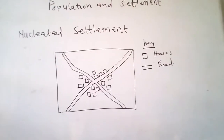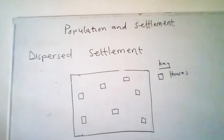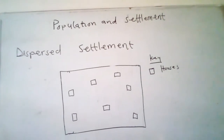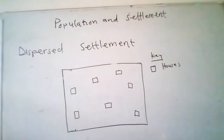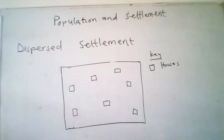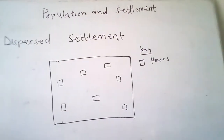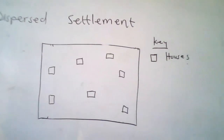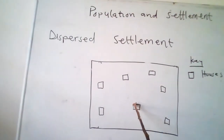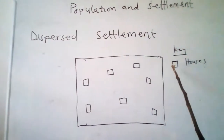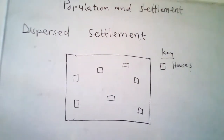Dispersed or scattered settlement is the type of settlement where the houses are scattered over a wide area. The houses are far apart from one another and the hamlets and villages are small. As you can see in the diagram, the houses are widely apart from each other. The box in the key represents a house.